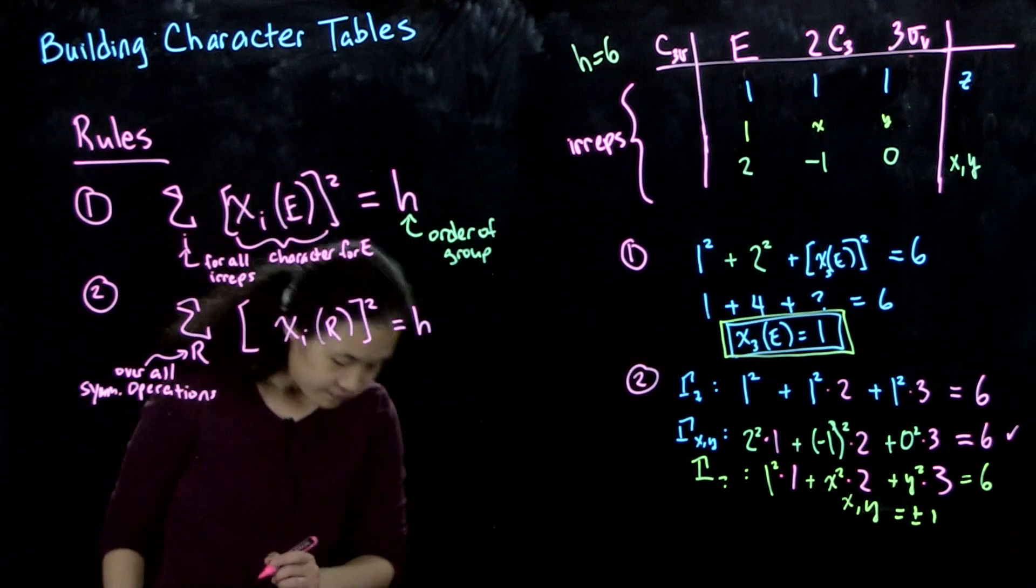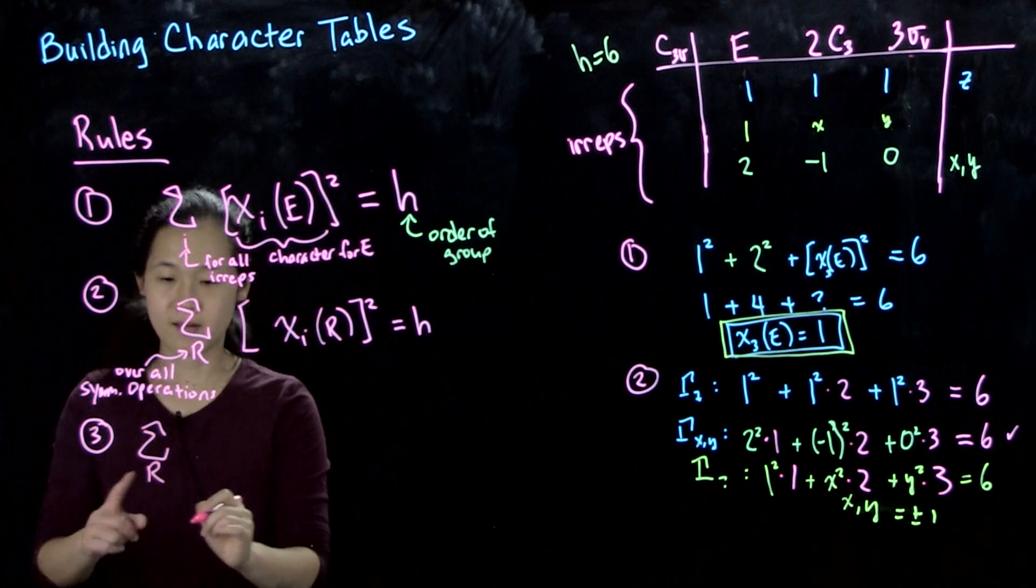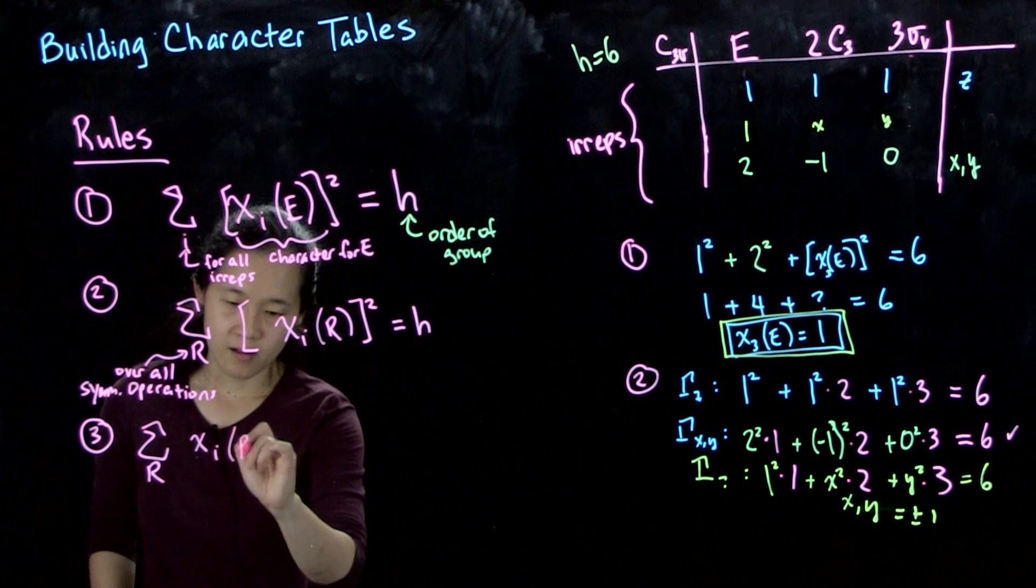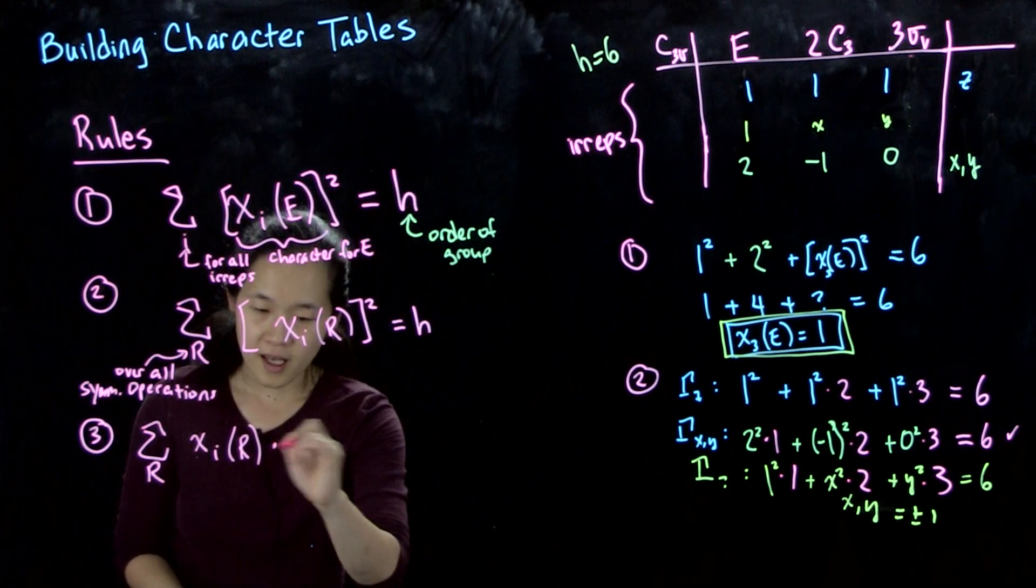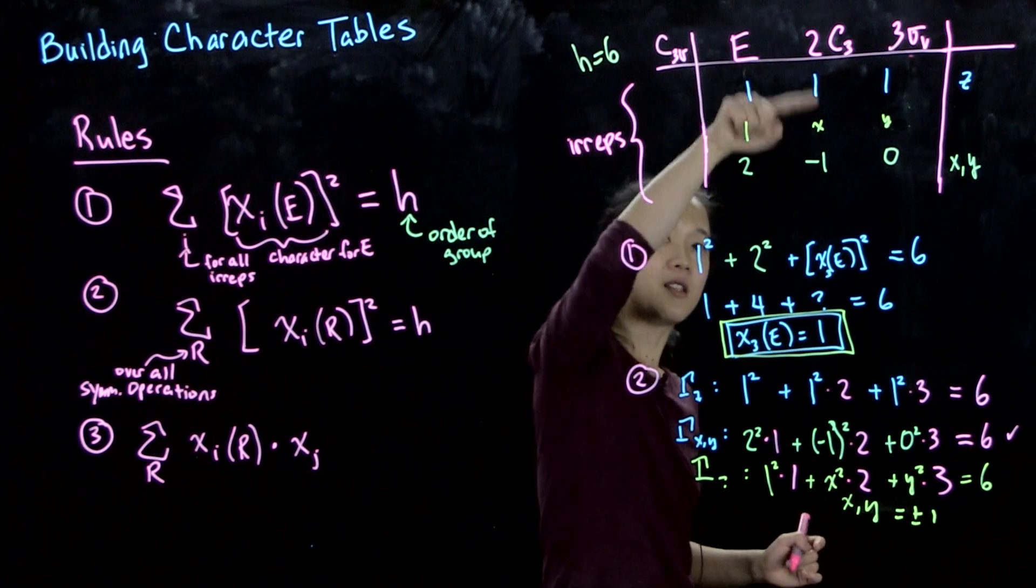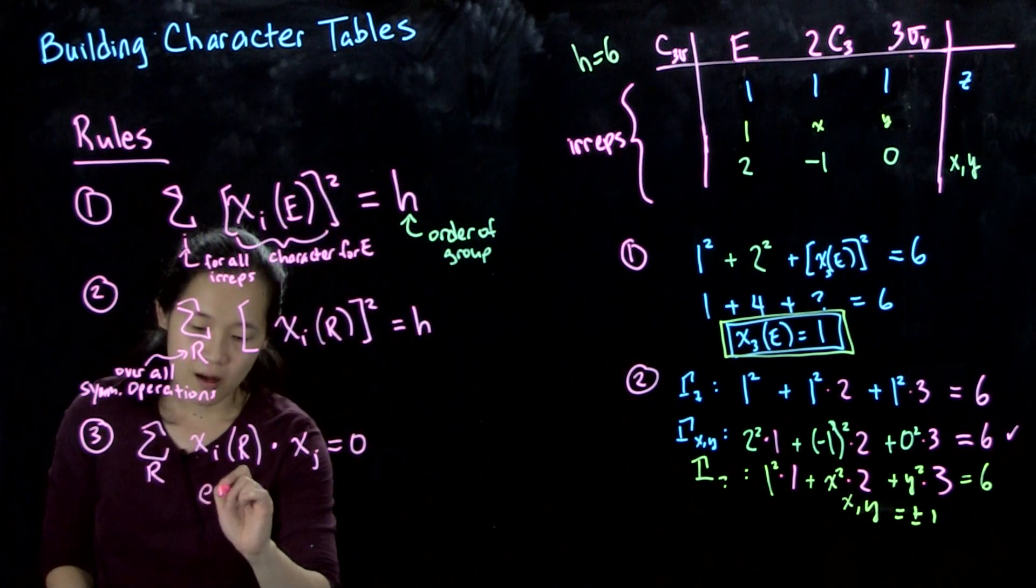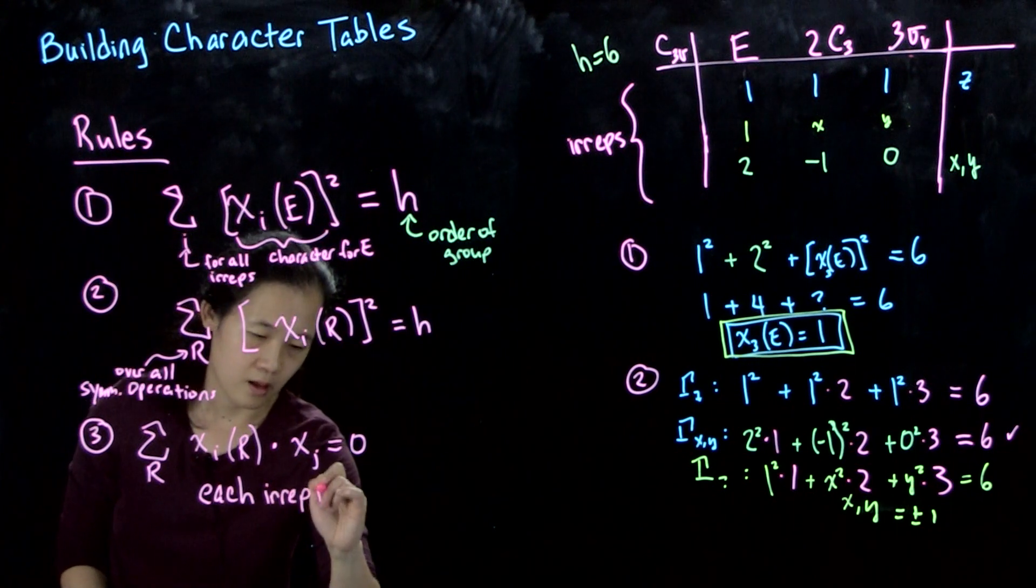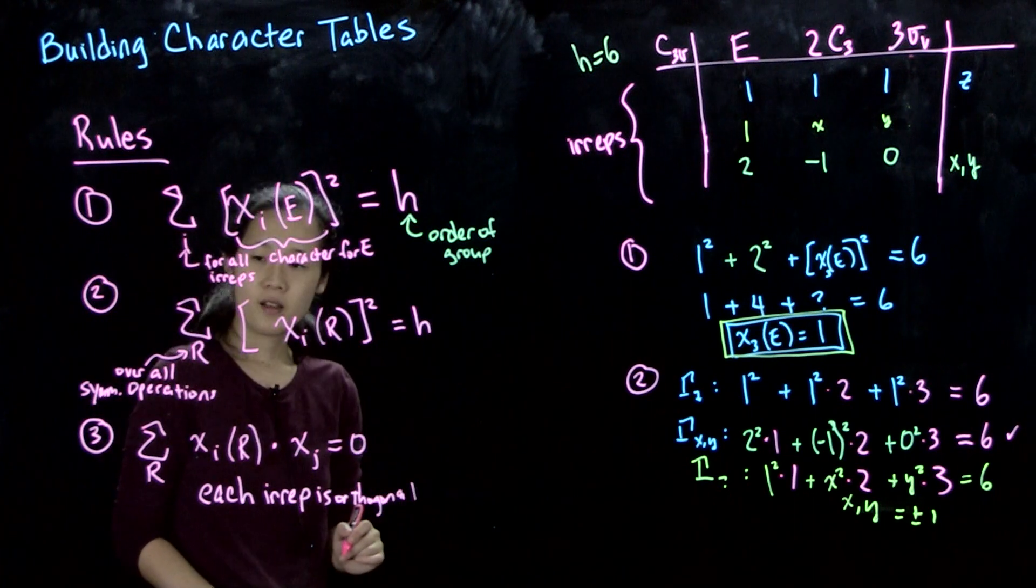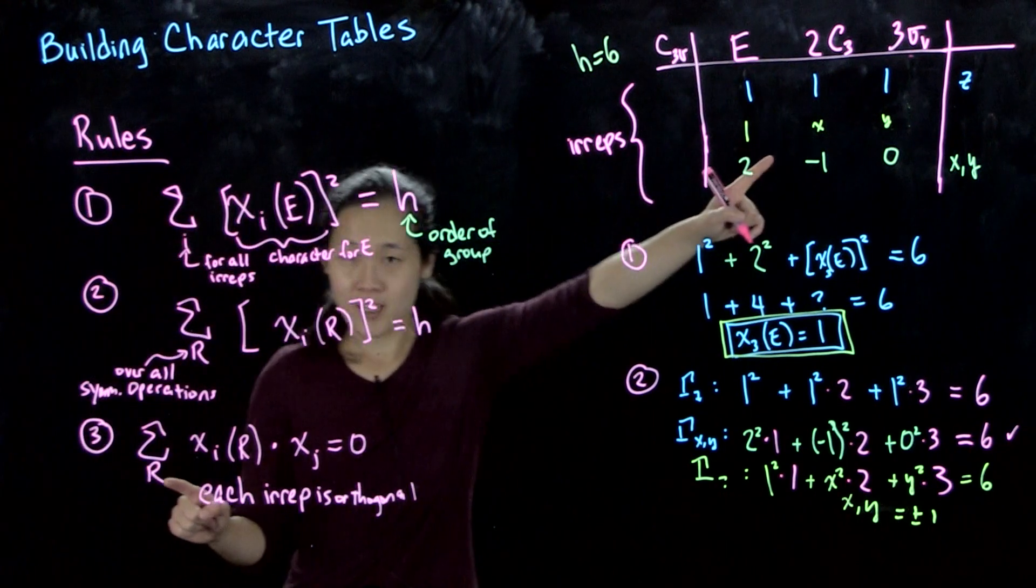Our third rule is that when you sum up over all operations again, going across the row, if you take one EREP, the character under one EREP, you can multiply that by a different EREP, chi i chi j, and then this is equal to 0. So what this is saying is that each EREP is orthogonal.